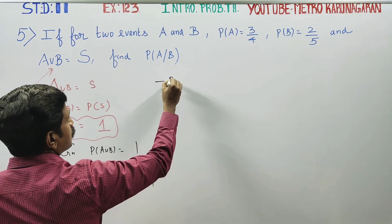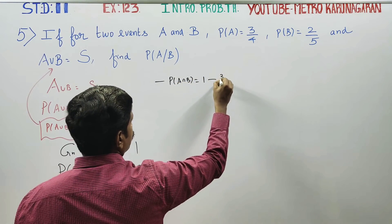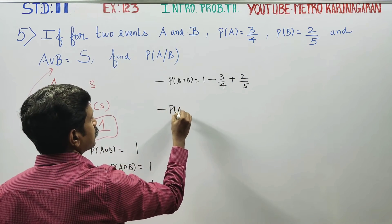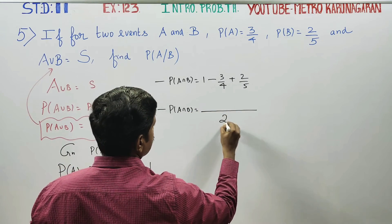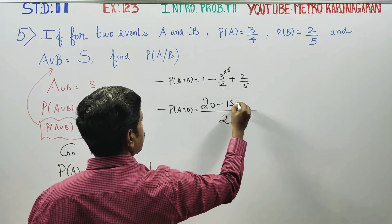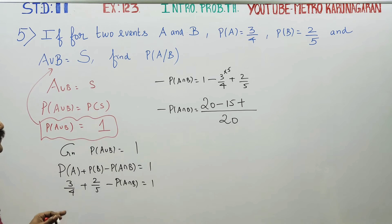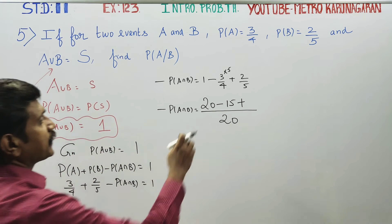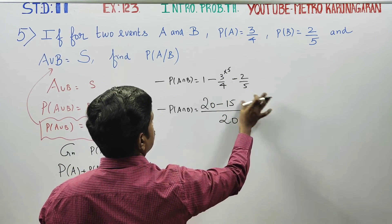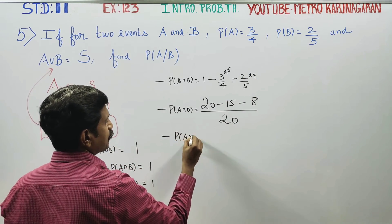Rearranging: probability of A intersection B is equal to 1 minus probability of A union B, which equals 1 minus 3 by 4 plus 2 by 5. So probability of A intersection B equals 1 minus the sum of the individual probabilities.